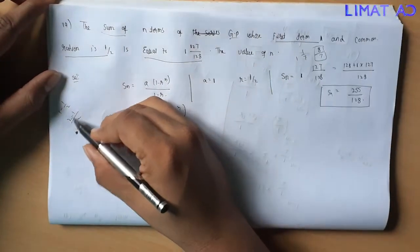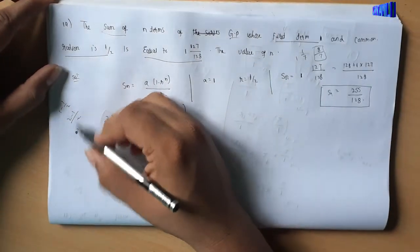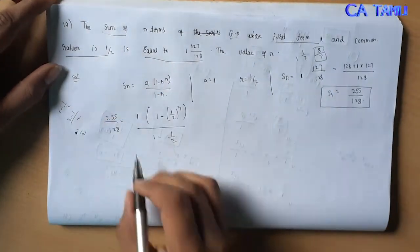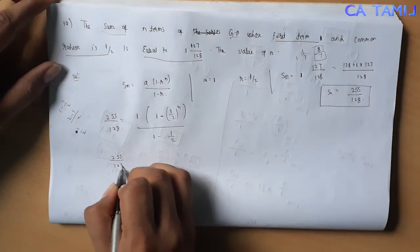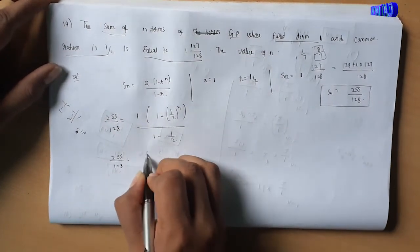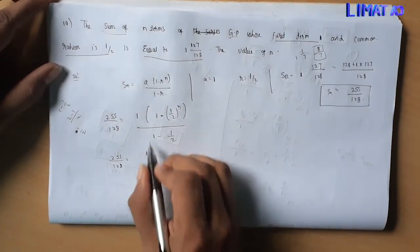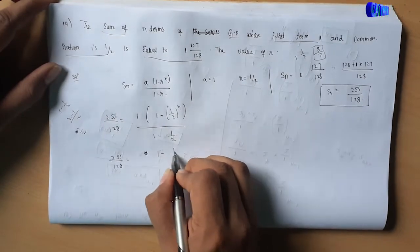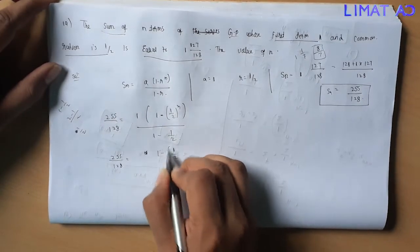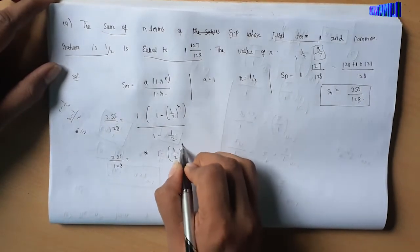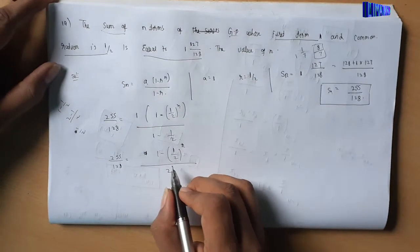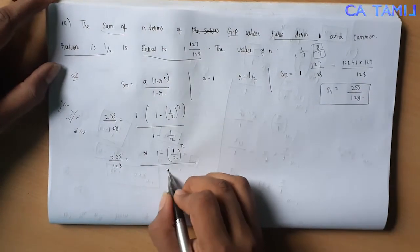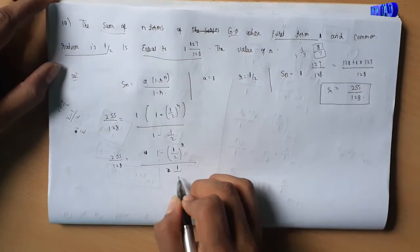With r equal to 1/2, the denominator 1 minus r becomes 1 minus 1/2, which equals 1/2. So we have 255 divided by 128 equal to 1 into 1 minus 1/2 to the power n, divided by 1/2.